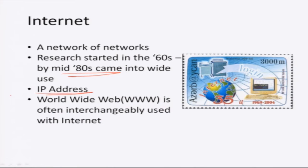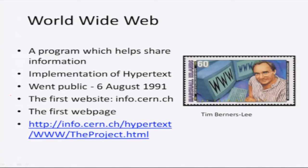The World Wide Web, www, is actually a program which runs on the internet, and people typically use the web and the internet interchangeably. Often when they say go to the internet and look for some document, what they mean is go and search for the document using the World Wide Web. The World Wide Web is basically a program which will help you share information. We call it technically an implementation of hypertext, which we will see in the next lecture.